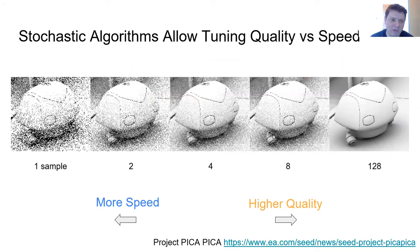And so in that vein, another way to do more with less is basically just stochastic algorithms in general, because they allow tuning for quality versus speed. So on the left, we have one sample per pixel of this ray traced AO, and it's just ugly, but it's the fastest.